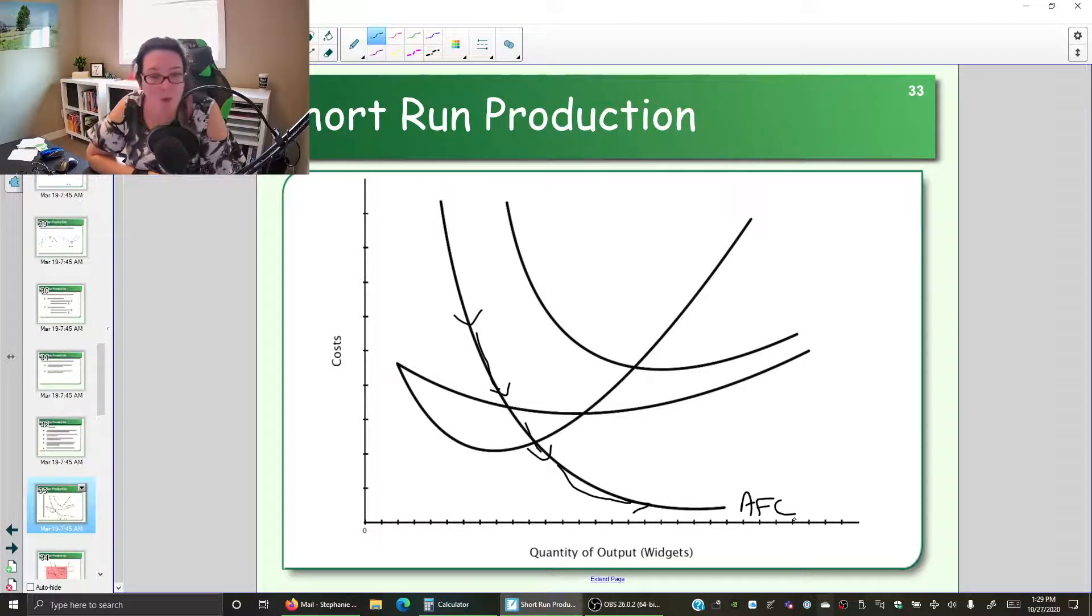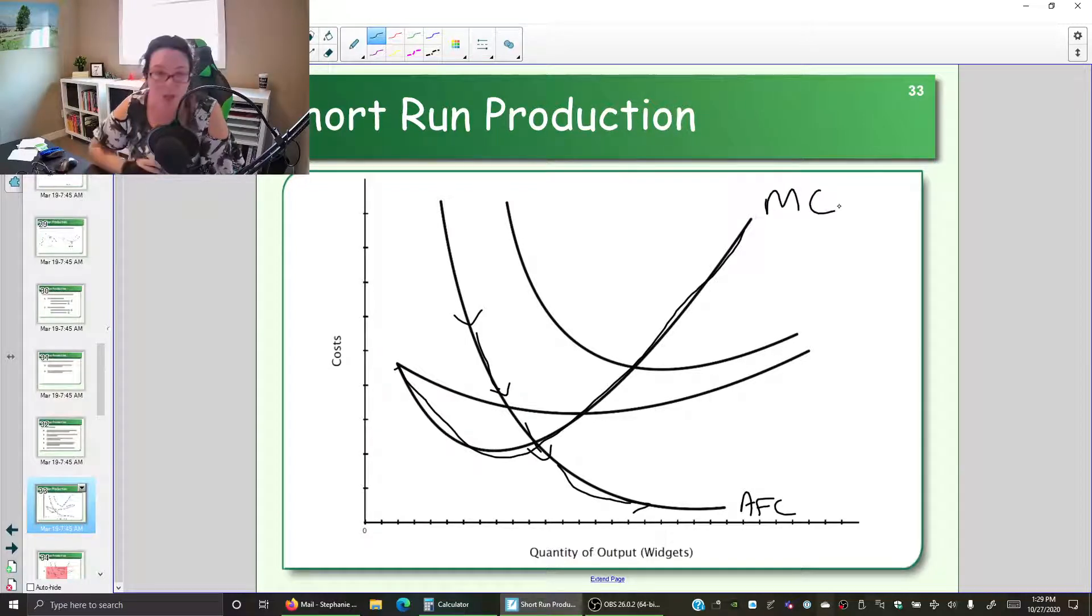What other graphs can we identify? The one that looks like a checkmark—we know that shape automatically tells us it is the marginal cost curve. It's the extra cost to produce one more widget, one more product.